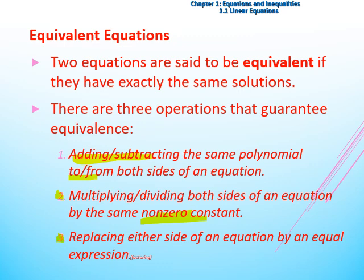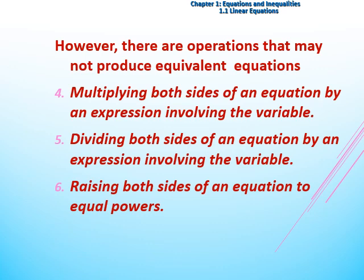The third operation that guarantees equivalence is replacing either side of an equation by an equal expression. However, there are operations that may not produce equivalent equations, such as: multiplying both sides of an equation by an expression involving the variables, or dividing both sides of an equation by an expression involving the variables, or raising both sides of an equation to equal powers. These three operations may not produce equivalent equations.